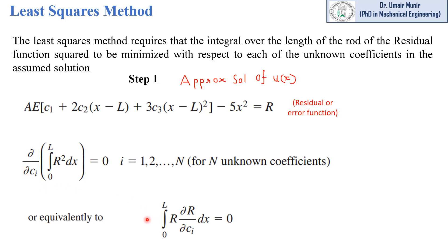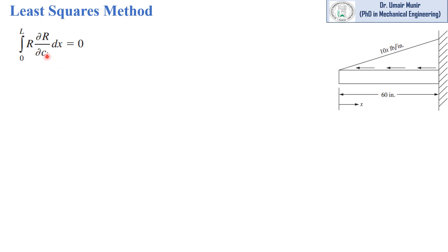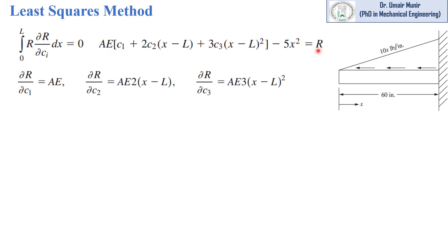This expression can be written in a specific form, where we multiply the residual function by the partial derivative of R with respect to each of the three unknown coefficients. If we differentiate this residual function with respect to c1, we get one expression; with respect to c2, another; and with respect to c3, we get a third expression. This gives us three equations.